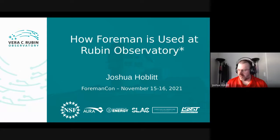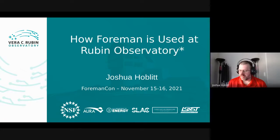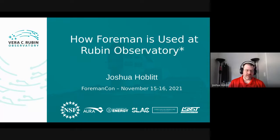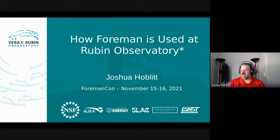Thanks to Melanie for introducing. My name is Josh Hoblitt and I'm a DevOps engineer at Rubin Observatory. I'll explain what that is in just a moment. I am a longtime Foreman user — I started using Foreman very early on, probably 2011, back when you'd get on IRC and bug OHAD and SAM. I stopped using it around 2014 when I joined Rubin.